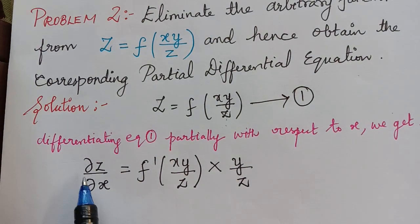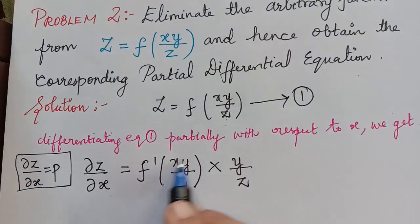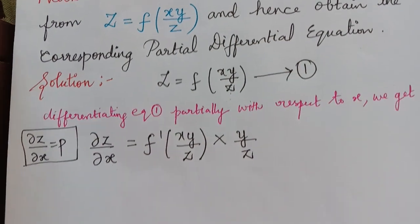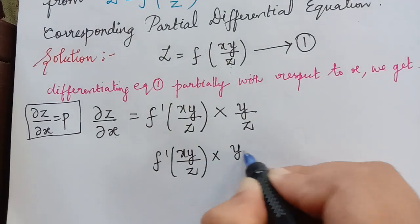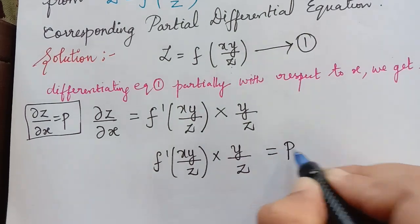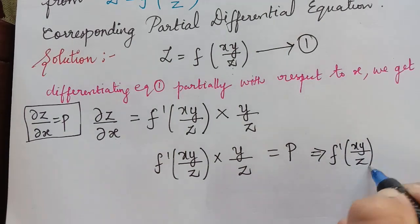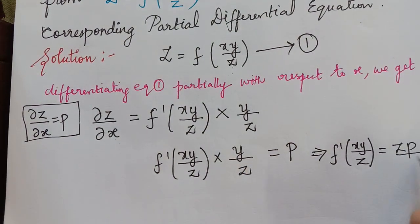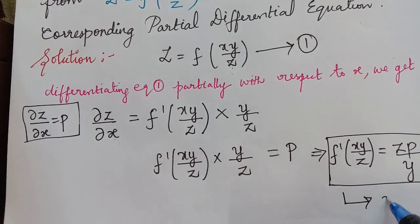We already know that dou z by dou x is equal to p. So f dash of xy by z multiplied with y by z is equal to p. From this we obtain f dash of xy by z to be equal to zp divided by y, taking y by z to the right. Let us mark this as equation 2.